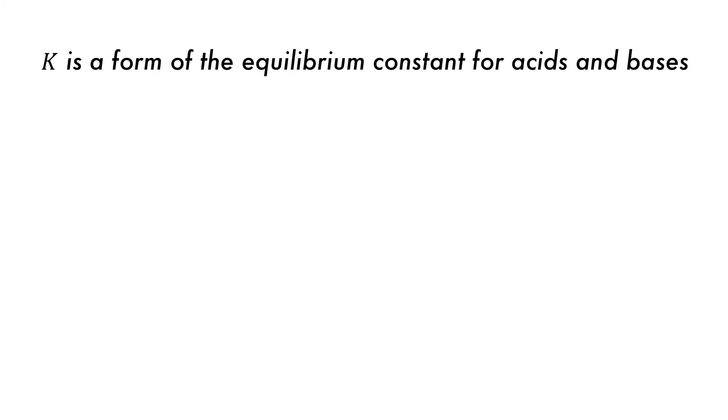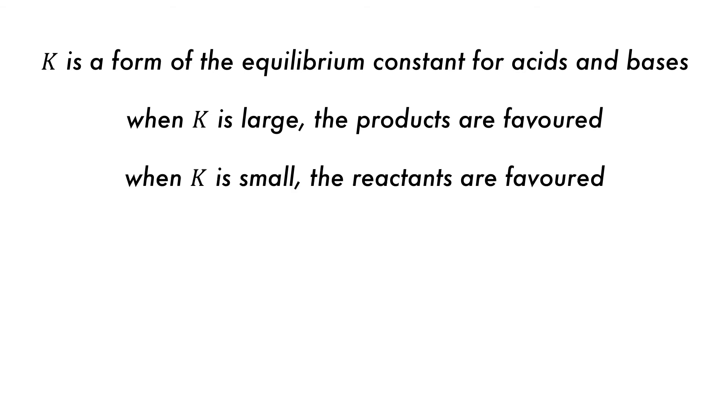Ka and Kb are the equilibrium constants for acids and bases respectively. Thus it follows that when K is large, the formation of product is favored, and when K is small, the reactants are favored.